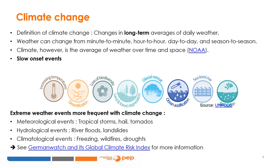Climate change is illustrated by a number of slow-onset events that include increases in temperature, desertification, loss of biodiversity, land and forest degradation, glacial retreating, ocean acidification, rising sea levels, and salinization. These events are barely perceptible to humans in their daily lives and thus have limited economic consequences, at least in the short period. Climate change makes the occurrence of extreme weather events like tropical storms, floods and droughts more frequent, and these types of weather events have much more important economic consequences.